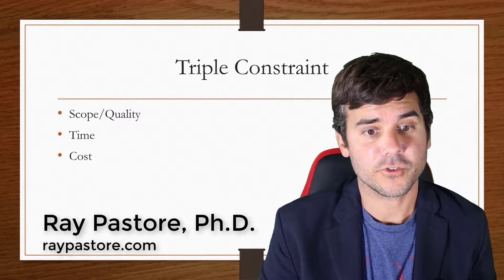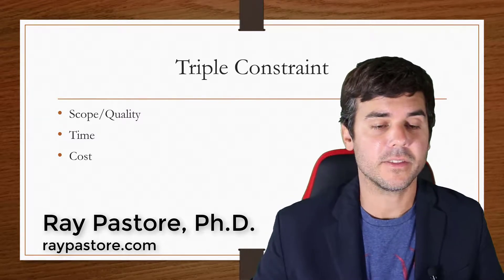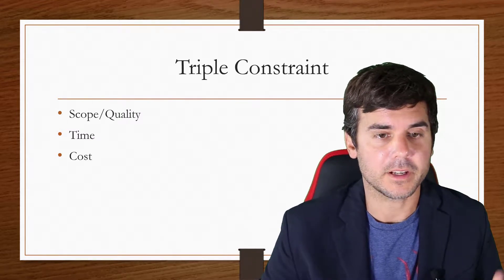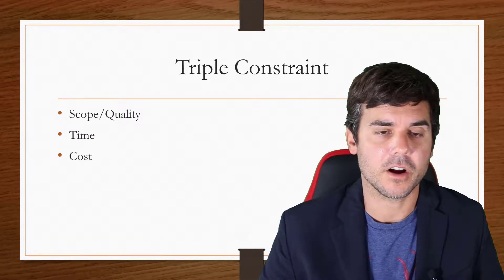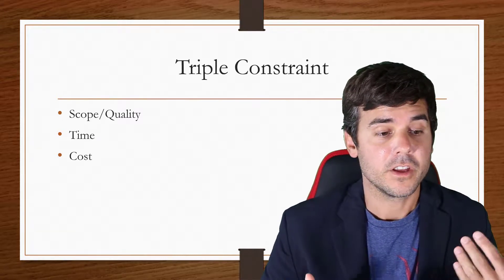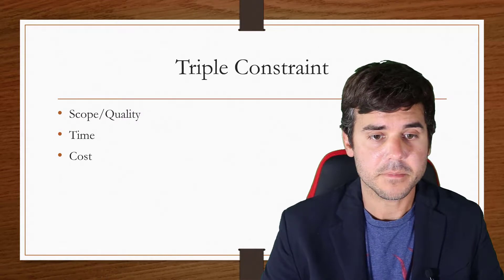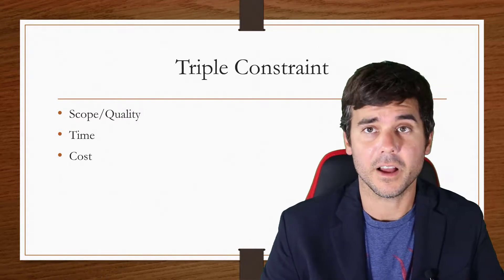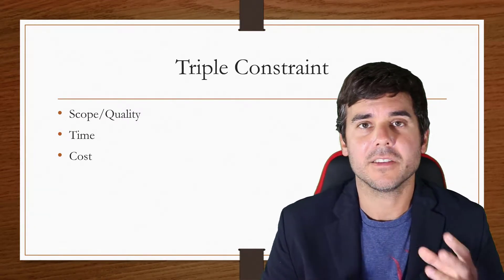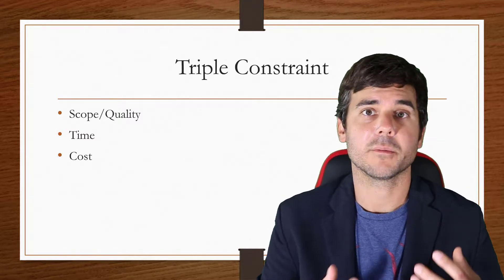A lot of times in instructional design or project management, when we're dealing with a project and working with the client to figure out what their needs are, there's something called the triple constraint, which is a combination of scope and quality, time, and cost. What that means is that I'm trying to balance these things as I work with the client to come up with an appropriate solution.